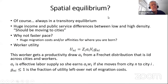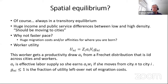Are we in spatial equilibrium? We're always in a transitory equilibrium. From the Gollin point of view, these huge income differences and huge public service differences between high and low density — urban and rural — mean people should be moving to cities. Why is it not at a faster pace? One explanation is migration costs — you have an affinity for where you're born.